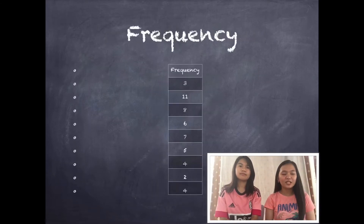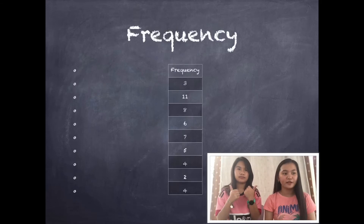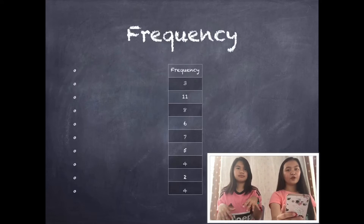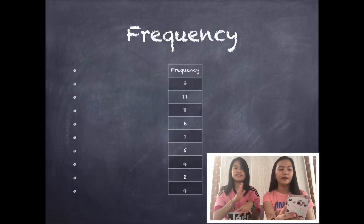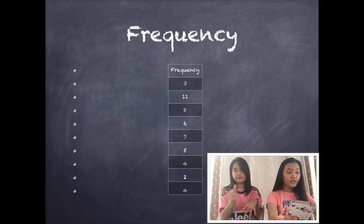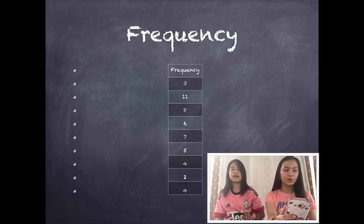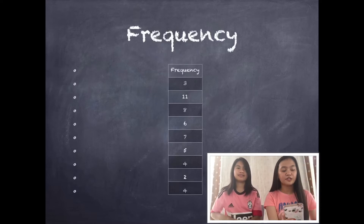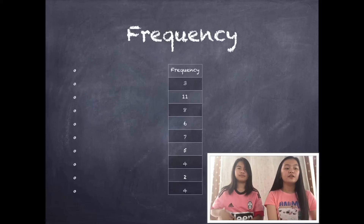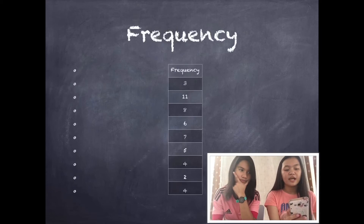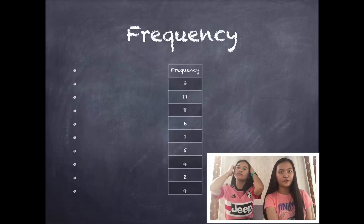The frequency determines how many times the data occurred. For 10–13 it occurred 4 times; 14–17, 2 times; 18–21, 4 times; 22–25, 5 times; 26–29, 7 times; 30–33, 6 times; 34–37, 8 times; 38–41, 11 times; and 42–45, 3 times.